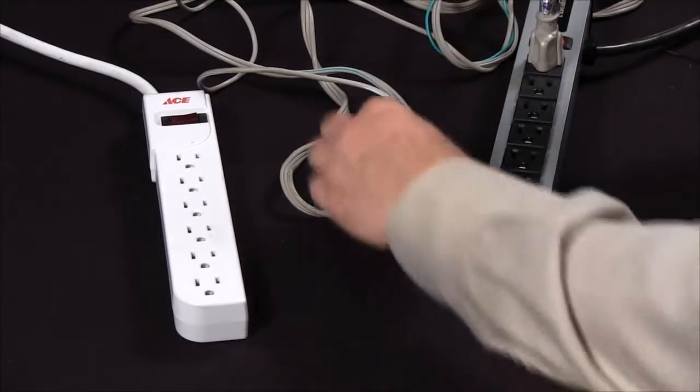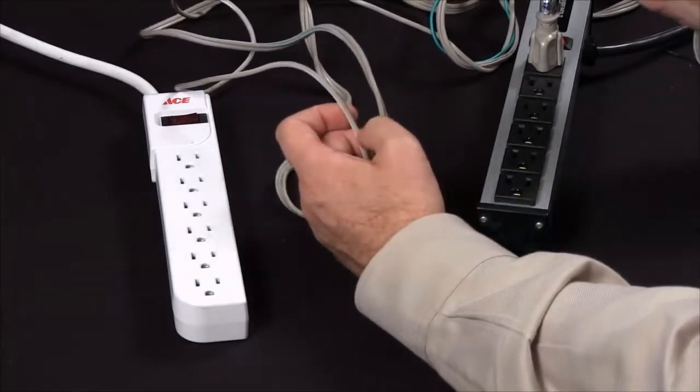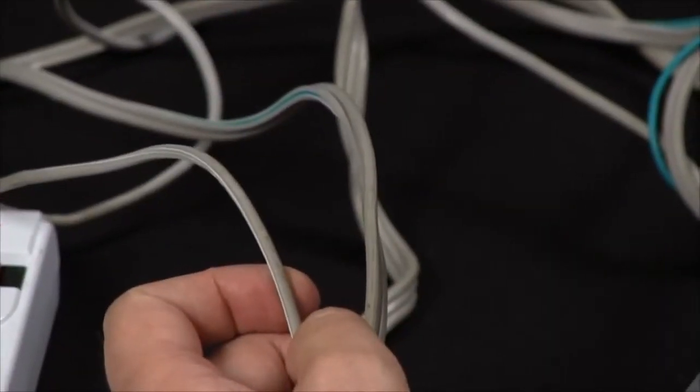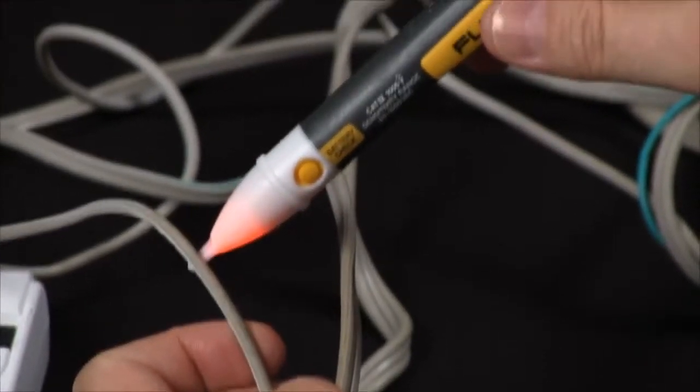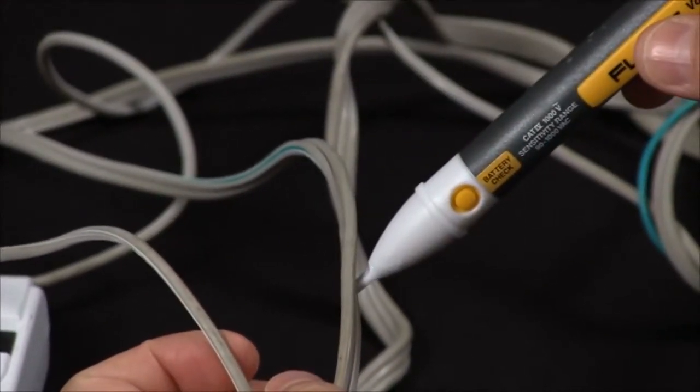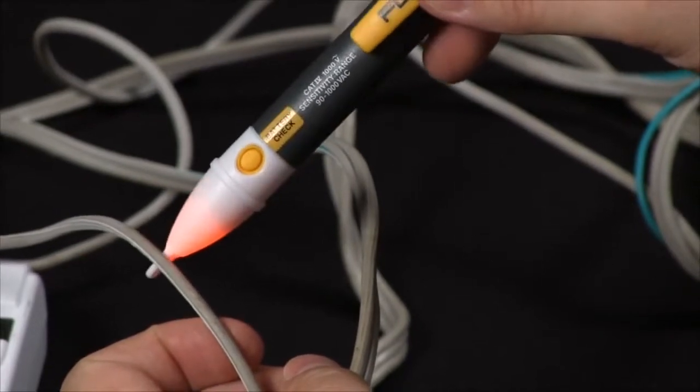Your first one will be to grab your conductors. You can automatically determine which is your hot and which is your neutral. You see when you do have power flowing, you do have your red indicator light.